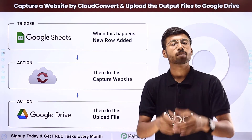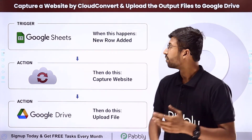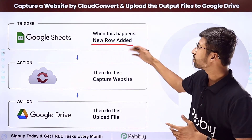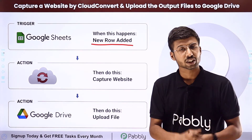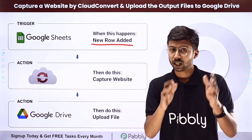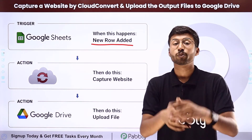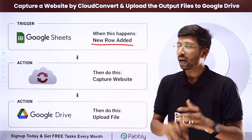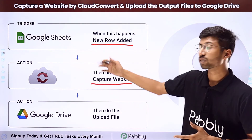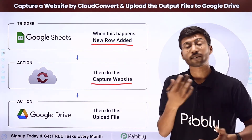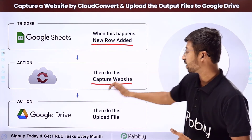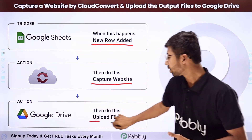For example, in the trigger application we have selected Google Sheets, so the trigger of this automation will be adding a new row in Google Sheets. Whenever you add new website URL data into Google Sheets, this automation will trigger, then CloudConvert will capture the website into a particular format — that is the action — and the next action will be uploading those captured website files into Google Drive.